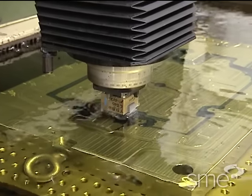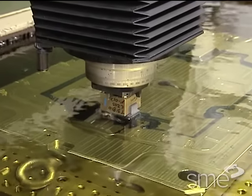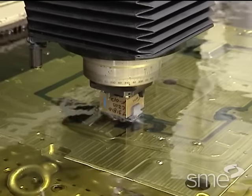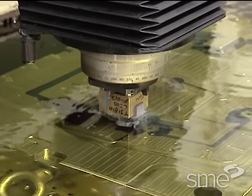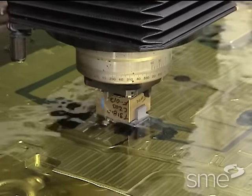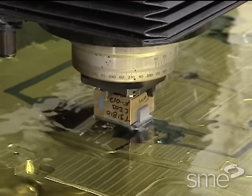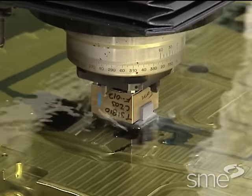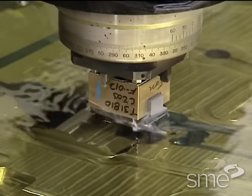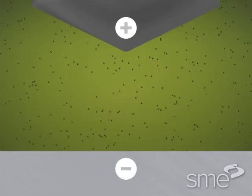As erosion continues, the machine controls advance the electrode through the work, always maintaining a constant gap distance between it and the workpiece. To understand how EDM removes metal, let's examine a single spark in the erosion process.